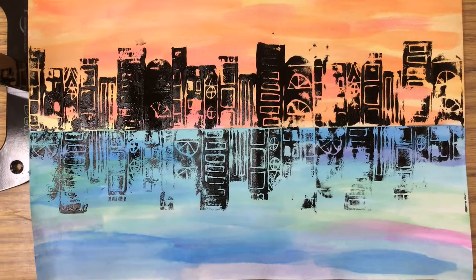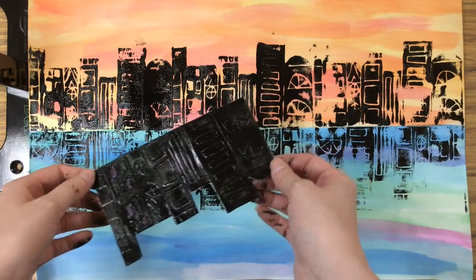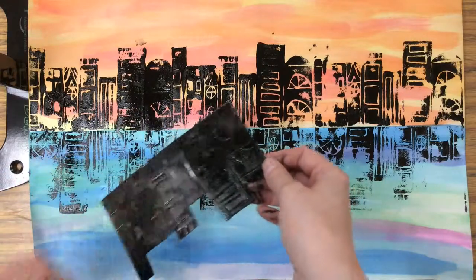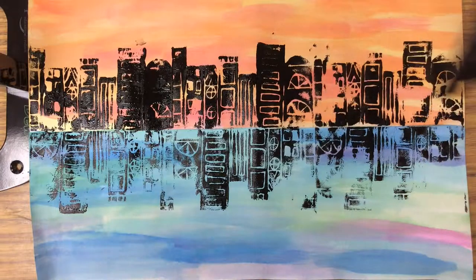Here is my finished skyline reflection. I am going to now take my printing plate and I'm going to rinse it in the sink to get a lot of the ink off, and I'm going to put my printing plate and my painting on the drying rack.